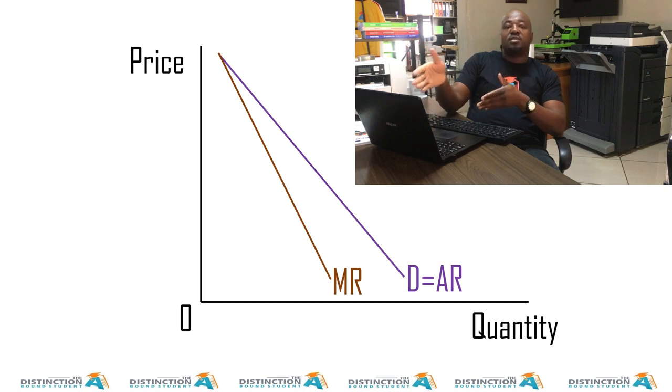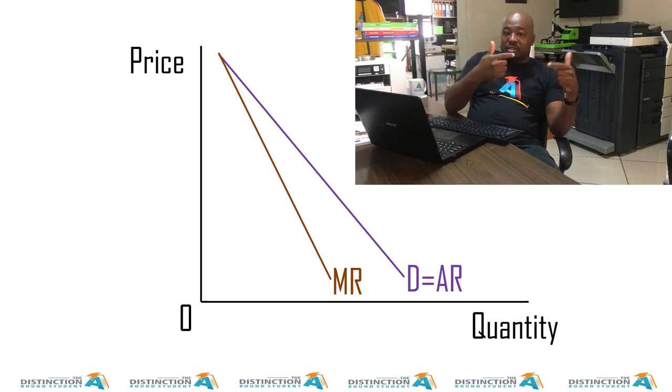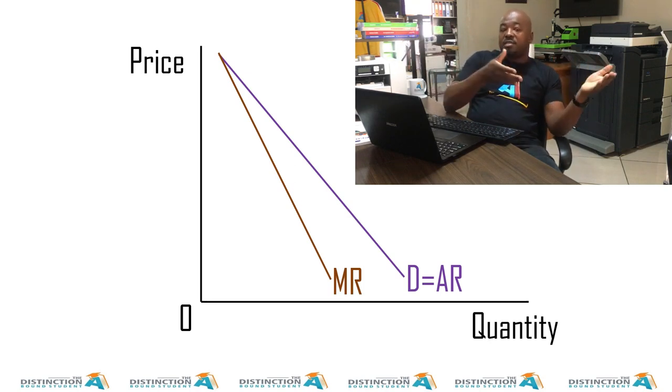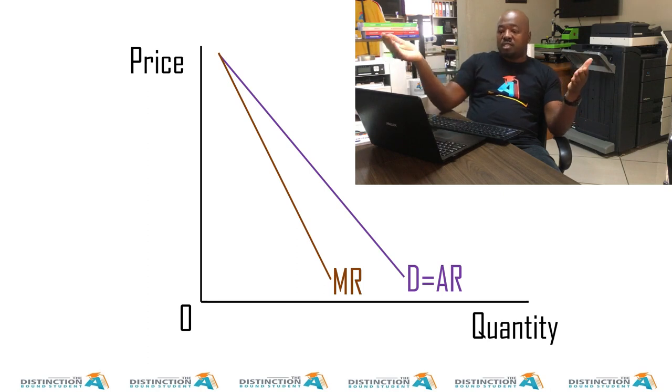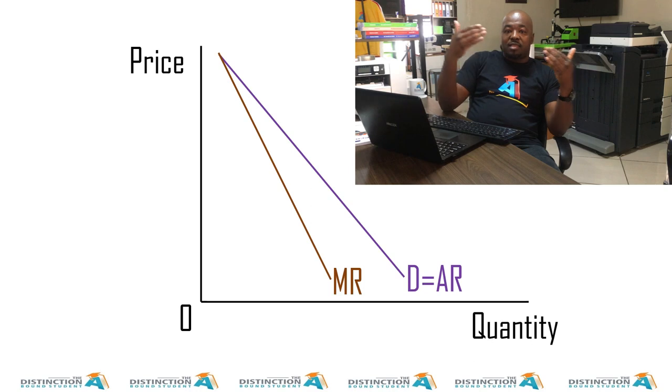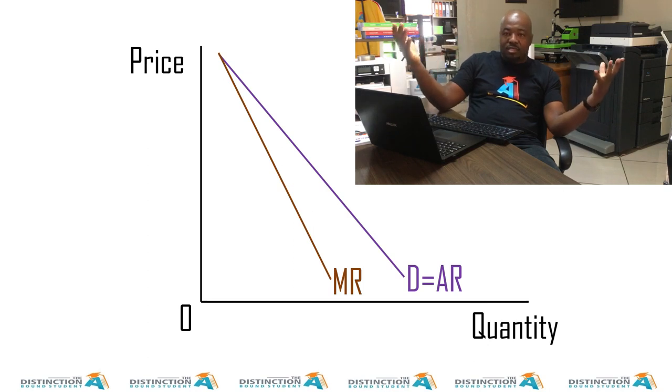Now that same question can be recycled and asked in as far as the monopoly is concerned. And how they do it now is instead of them saying why is MR equal to AR, they say why is MR not equal to AR, or why is MR not equal to demand? Well, the answer to the question is because each additional unit is sold at a lower price. In case of a perfect competitor, we say each additional unit is sold at the same price. In this case, we say each additional unit is sold at a lower price.